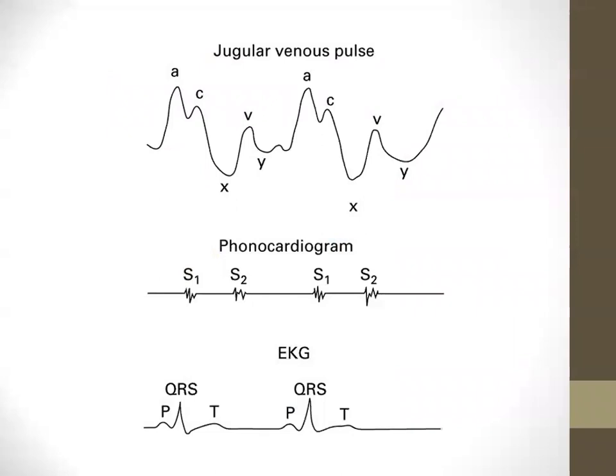To differentiate the various JVP waves in practice, one helpful approach is to simultaneously auscultate the heart and listen for S1 and S2. S1 corresponds to mitral and tricuspid valve closure and is more prominent at the apex and left lower sternal border. S2 corresponds to aortic and pulmonic valve closure and is louder at the second intercostal space right and left sternal border. Using S1 and S2 as anchors helps you identify the corresponding JVP waves.